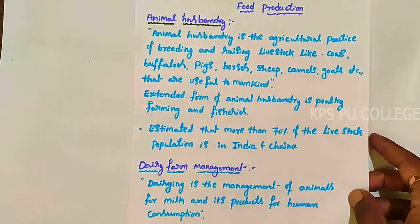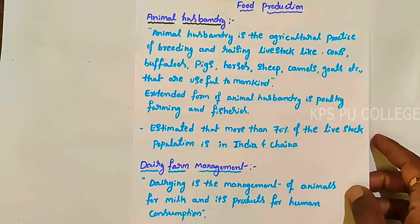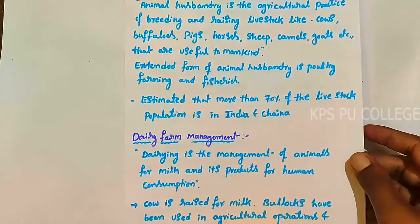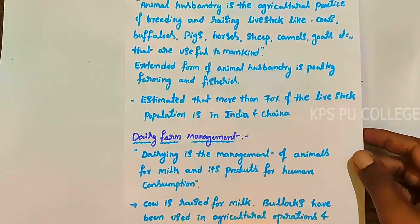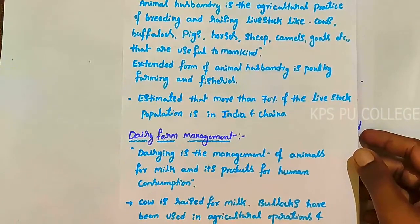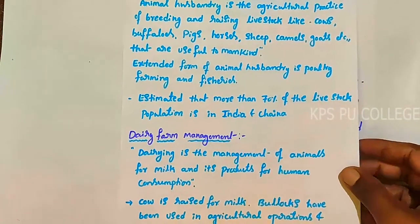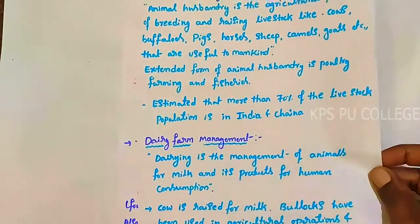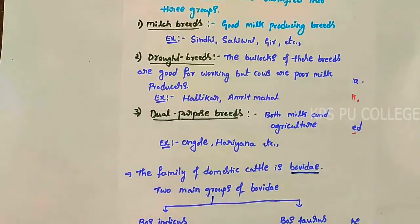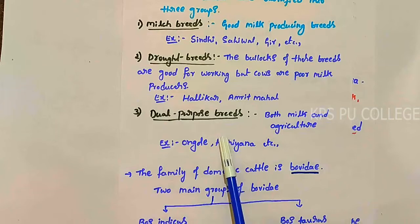To summarize dairy farm management: it is the management of animals mainly for milk and its products for human consumption. Cattle are classified into three types on the basis of milk-producing and working purpose: milk breeds, draught breeds, and dual purpose breeds.